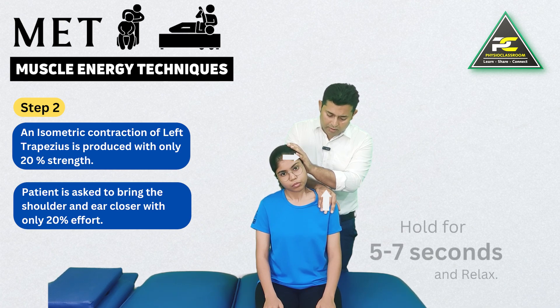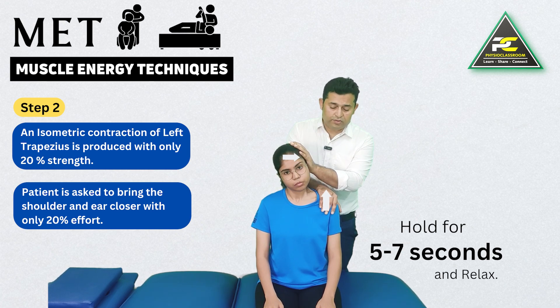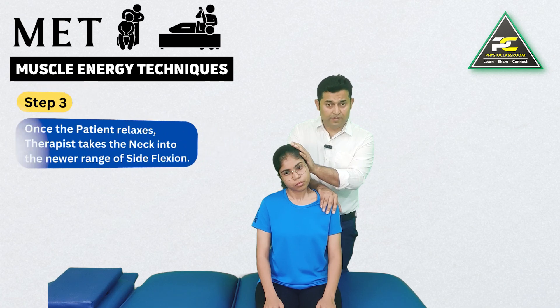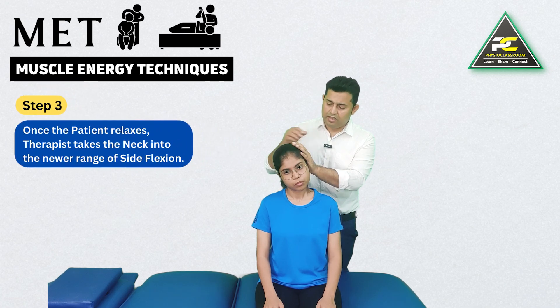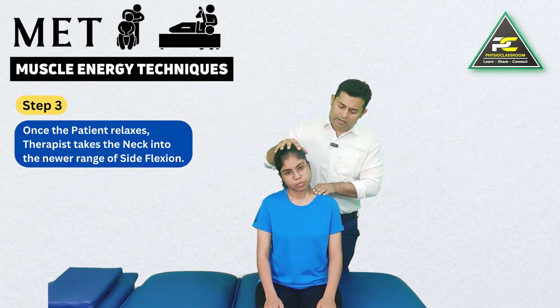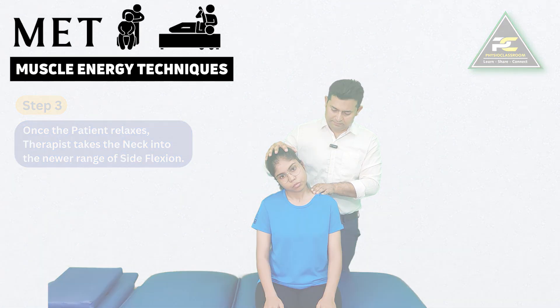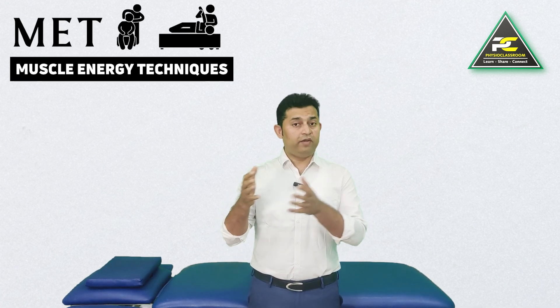There should be no movement occurring. The patient maintains this effort for around five to seven seconds and then relaxes. Once the patient relaxes, the therapist takes the head and neck to the next improved range of the perceived resistance barrier.